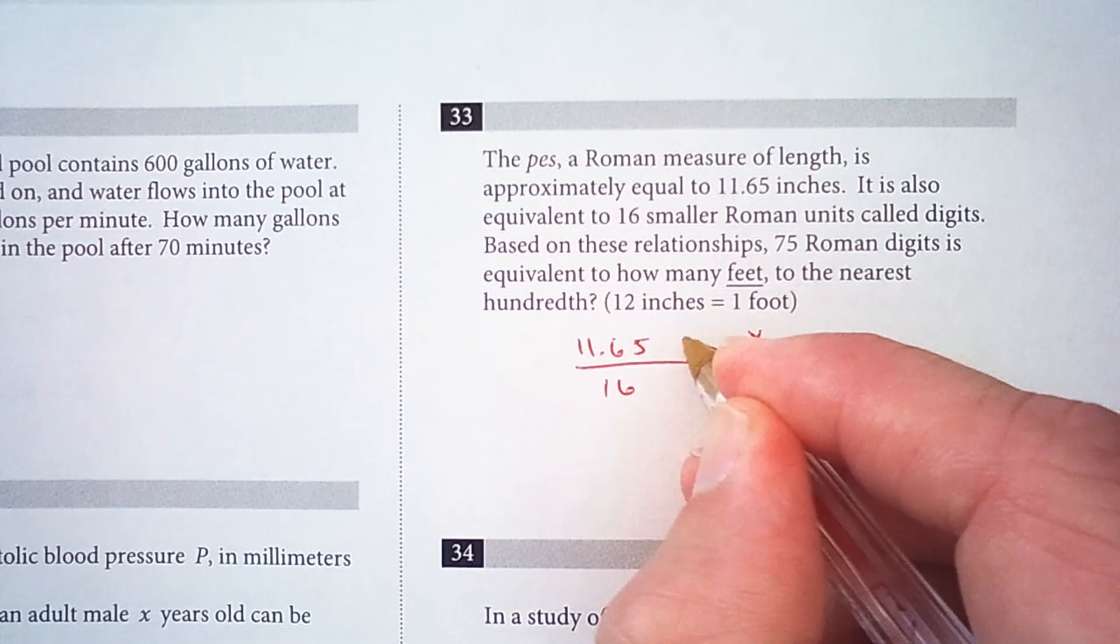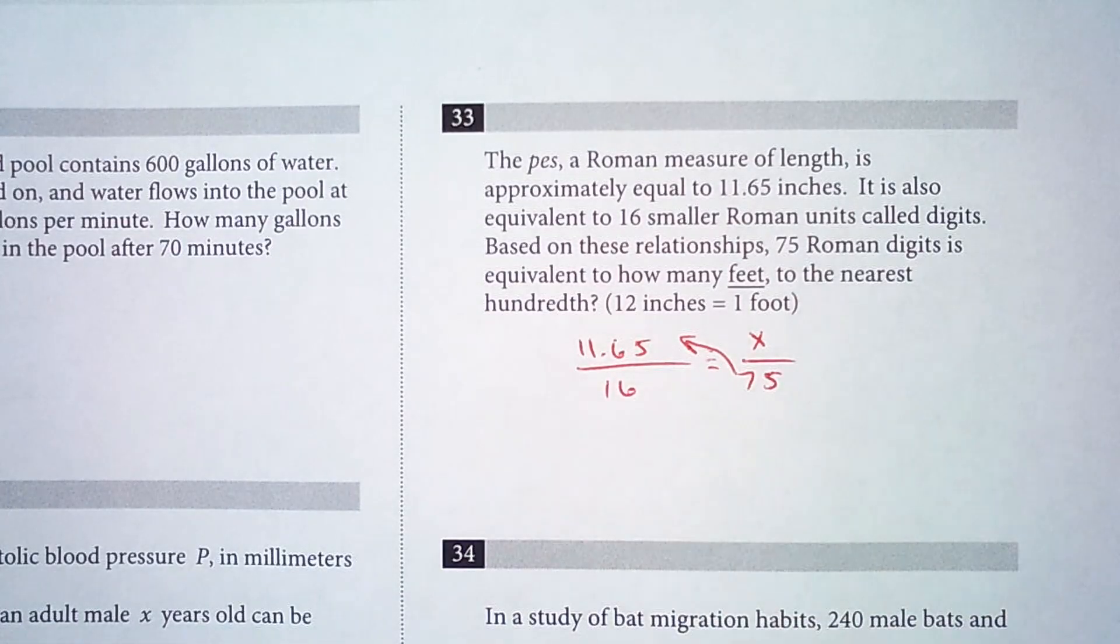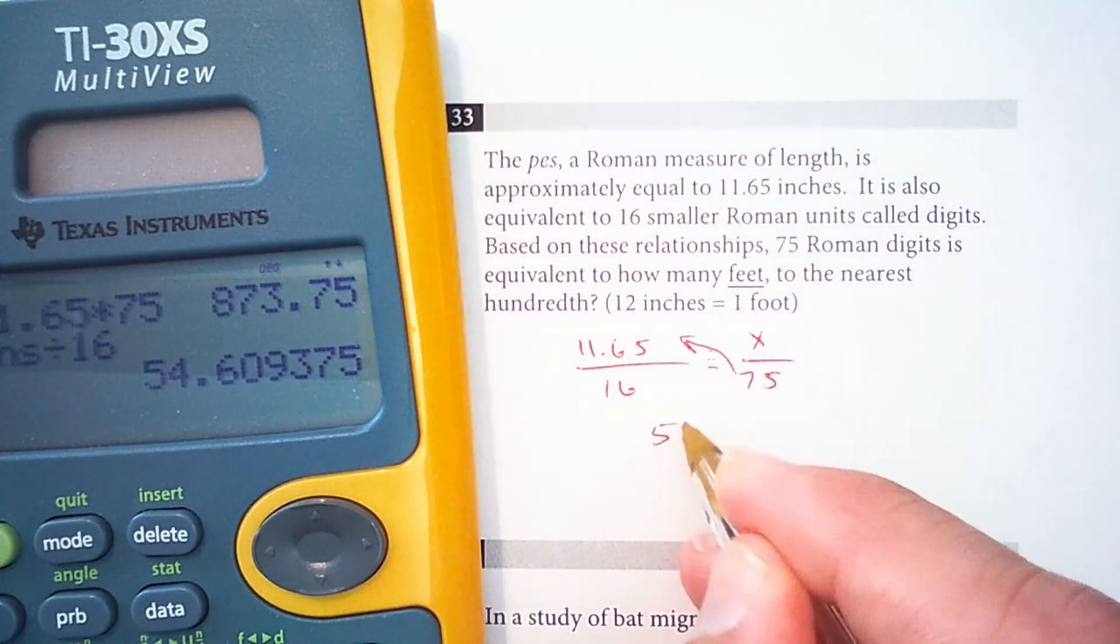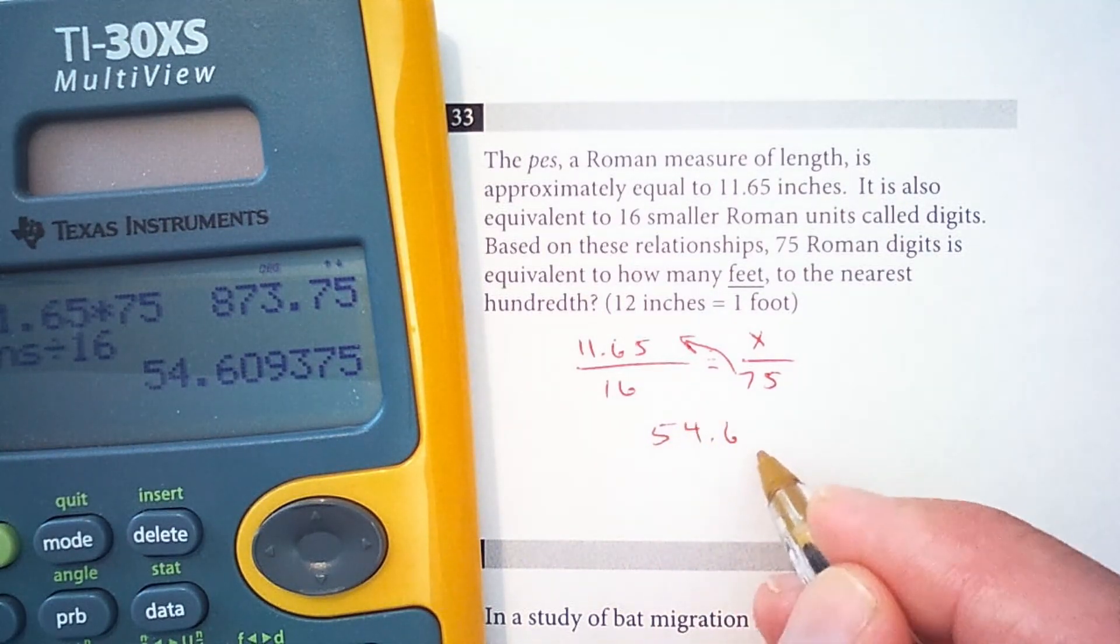So we're going to take this 75 and multiply it across. So we have in the numerator 11.65 times 75. Then we have to divide that by 16 and we get 54.6 inches.